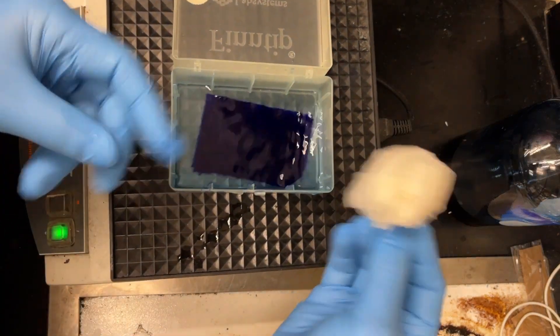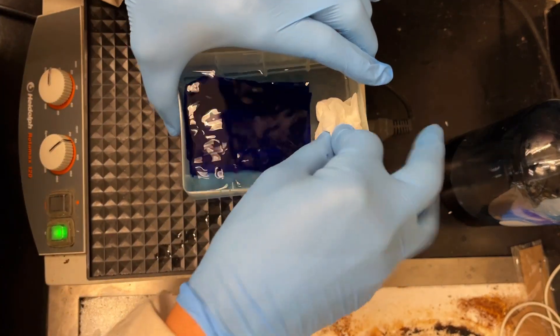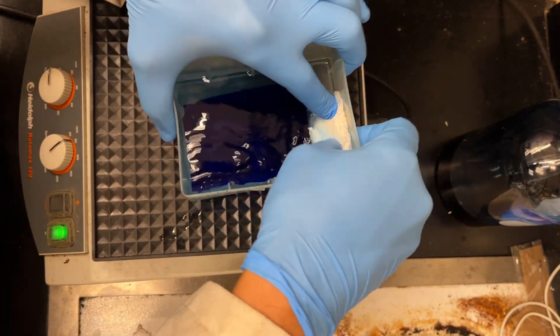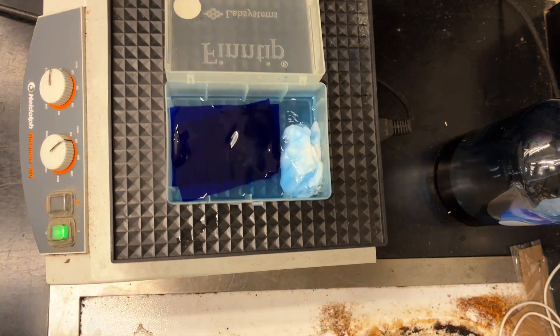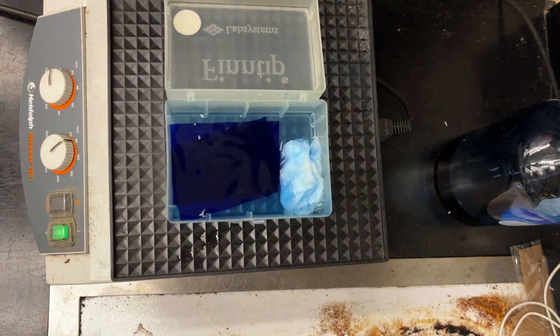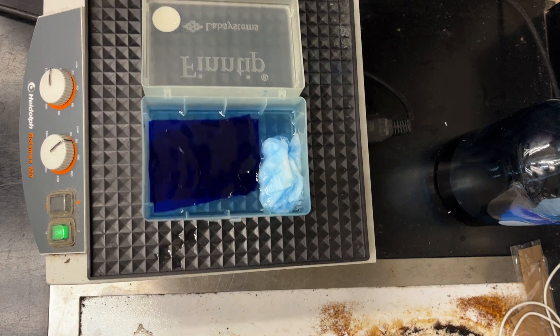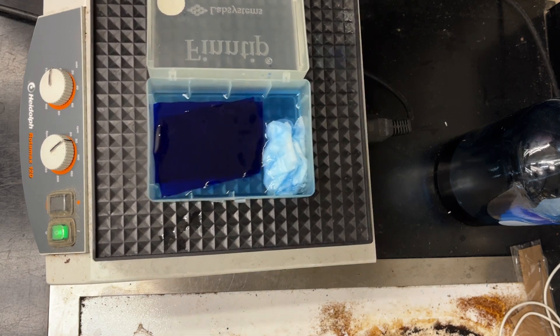And look how blue the gels are. Now, to help with the decolorizing, what you can do is stick a little bit of a wad of Kimwipe in the corner. And the Kimwipe, as it sits there, starts to absorb the blue color, removes it from the decolorizing liquid that it's sitting in, and it just helps speed up the process.